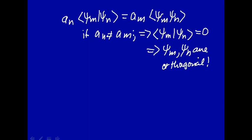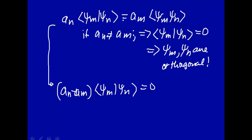Okay, that's kind of cool. Well, maybe that's not obvious. Let's redo this. Let's say, let's subtract, let's take this on the other side. So here we have A N minus A M times this integral psi M psi N. That's equal to zero. So we just subtracted that.